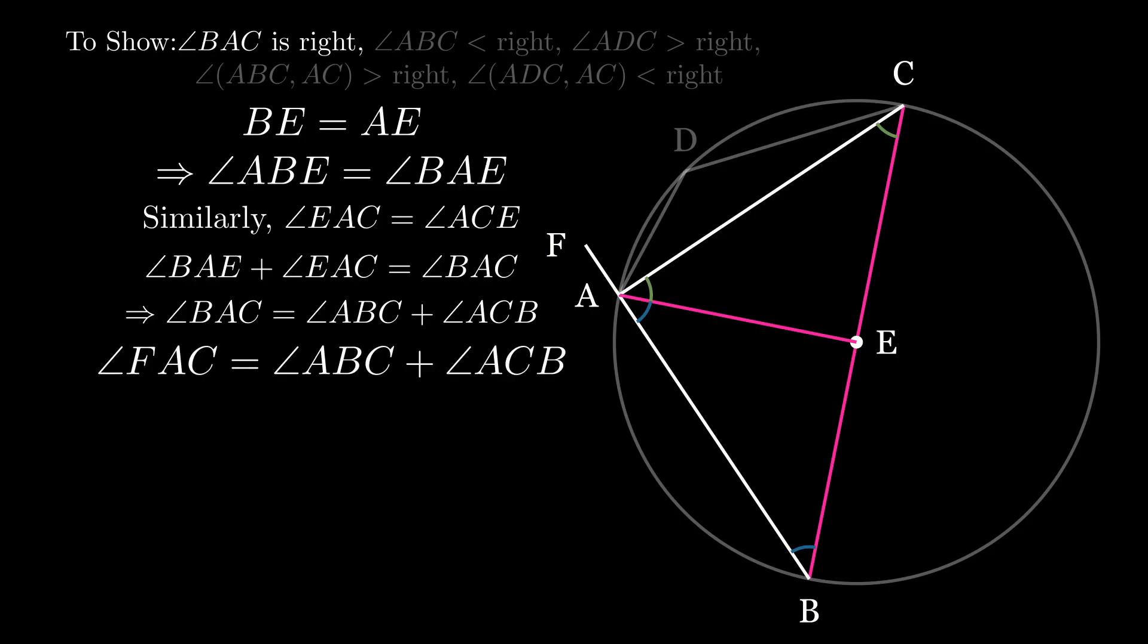Angle FAC exterior to triangle ABC is equal to angle ABC plus angle ACB, and is thus equal to angle BAC.